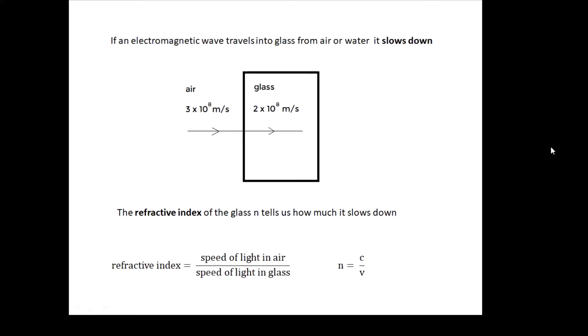If light is traveling in air at about 3 × 10^8 meters per second, if it goes into glass it slows down. It's like a car driving into a muddy field, and the light will slow down. In this particular type of glass it slows down to 2 × 10^8 meters per second—it's slowed down quite a lot.